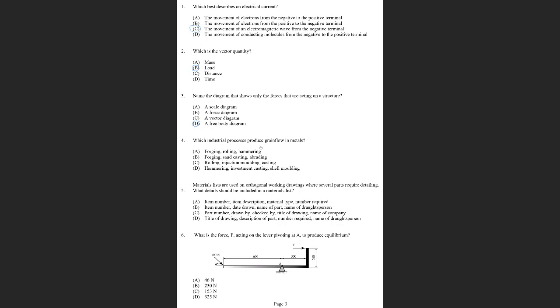Which industrial processes reduce grain flow in metals? If you have a forged bolt, for example, grain flow is the alignment of the grains to duplicate the outer surface. And this is how you draw the grain flow for a bolt. Any of these processes - forging, rolling, or hammering - will produce grain flow. So the answer to that question is A.